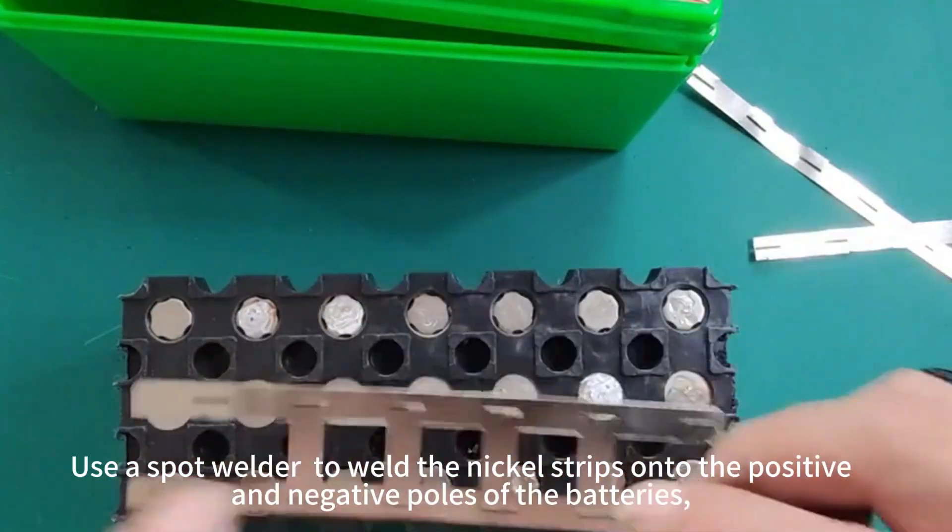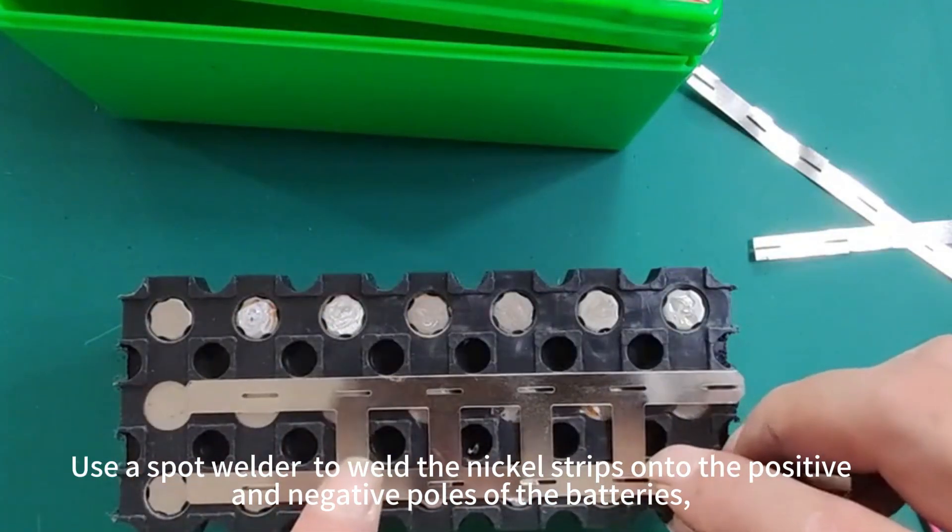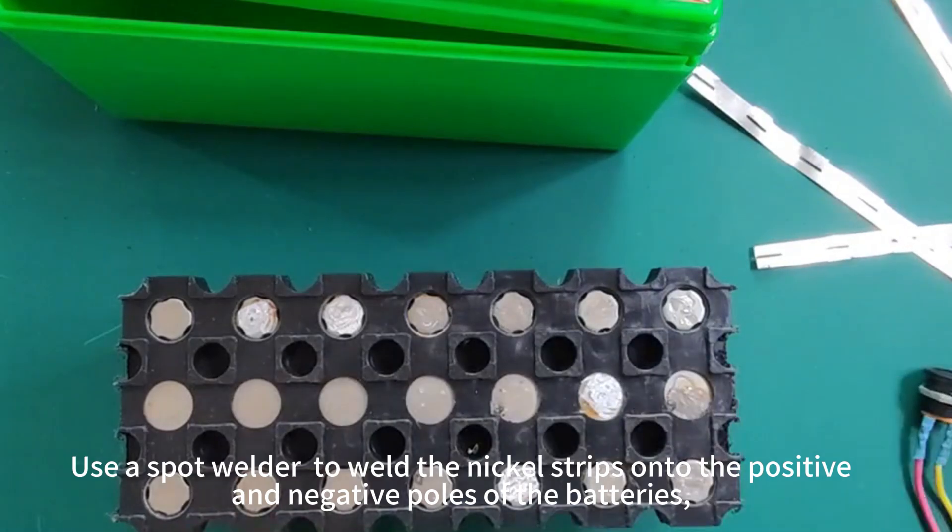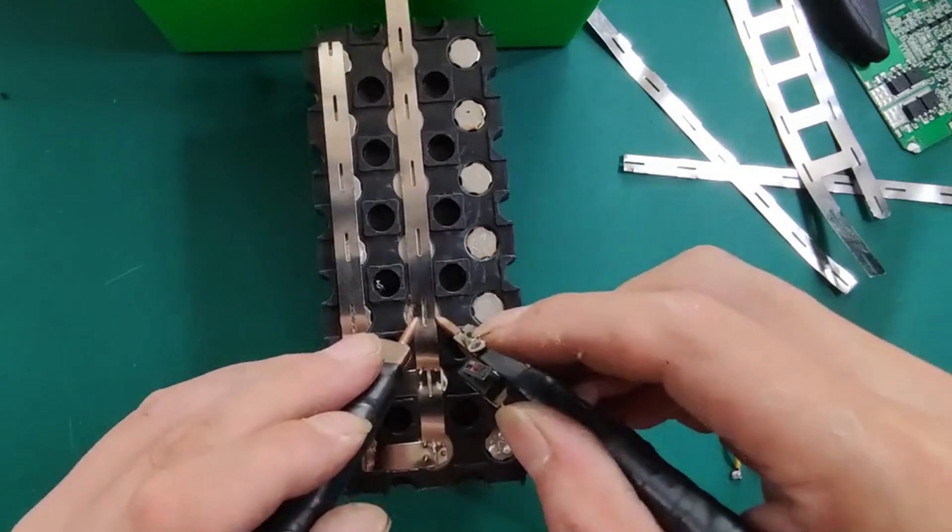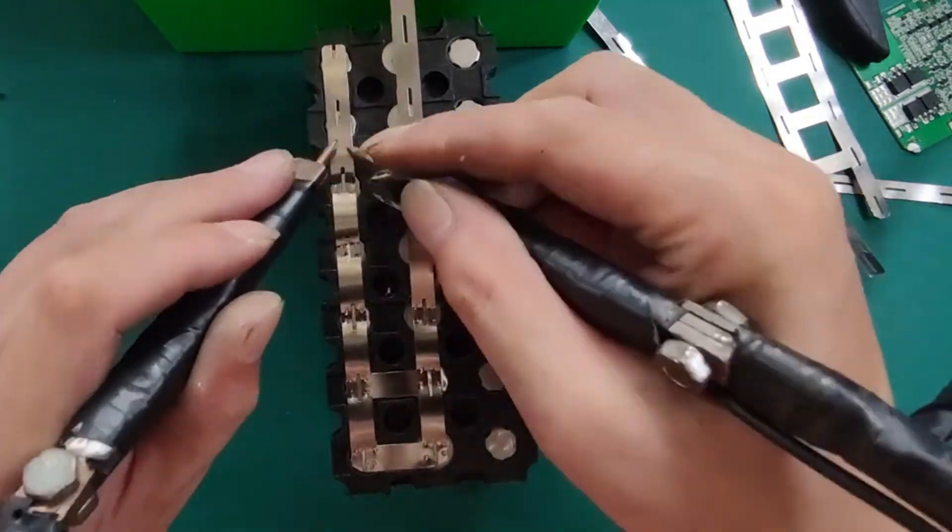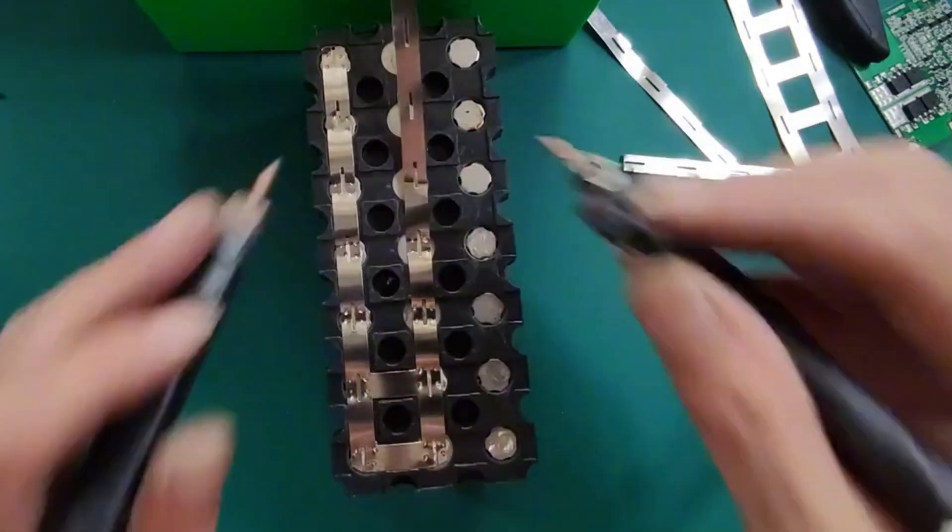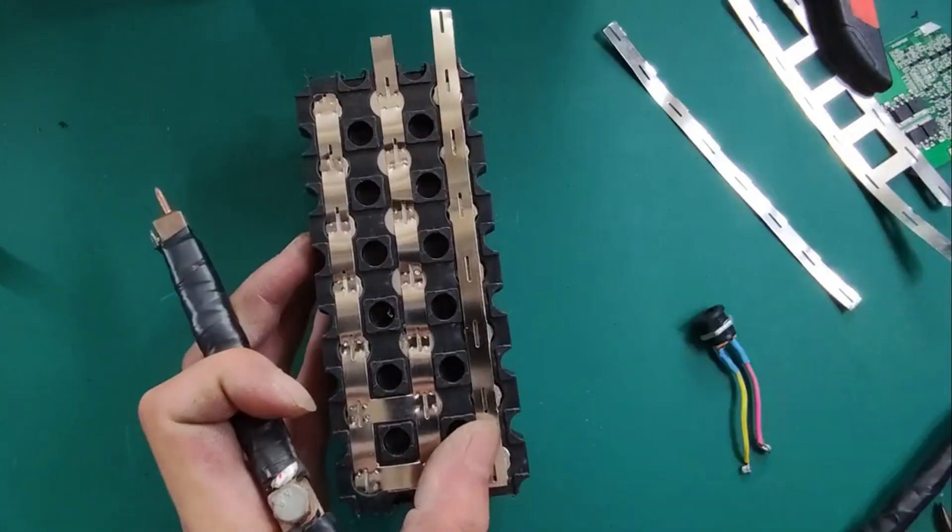Use a spot welder to weld the nickel strips onto the positive and negative poles of the batteries. Excellent!